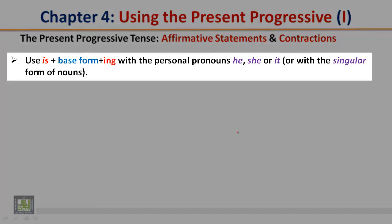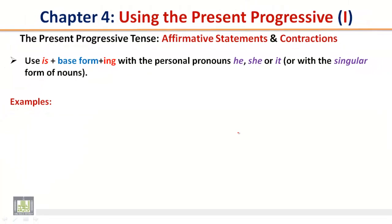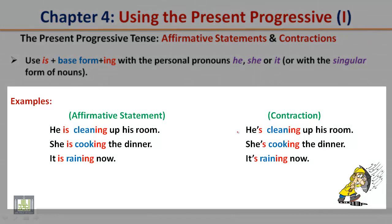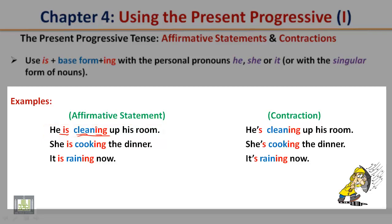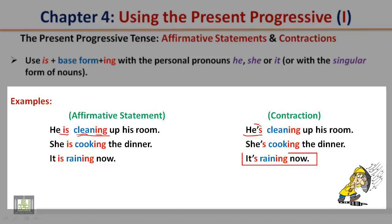Use is plus base form plus -ing with the personal pronouns he, she, or it, or with the singular form of nouns. Examples — Affirmative statement: He is cleaning (notice 'clean' is the base form, plus -ing) cleaning up his room. Contraction: He's cleaning up his room — you will see the apostrophe s instead of 'he is.' Affirmative statement: She is cooking the dinner. Contraction: She's cooking the dinner. Affirmative statement: It is raining now. Contraction: It's raining now.